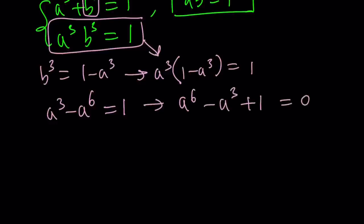Oh my God, it's like a 6-degree equation. Don't worry about it. No big deal, because this is quadratic. If you replace a³ with c, then you will see what happens. c² - c + 1 = 0.